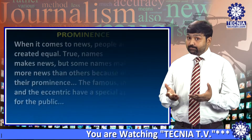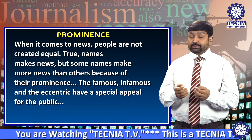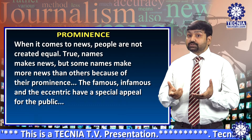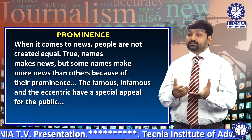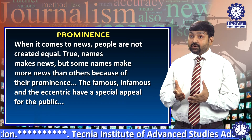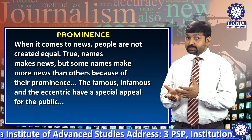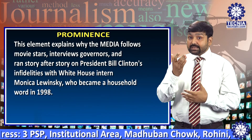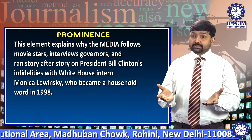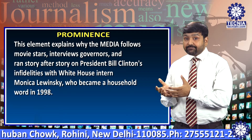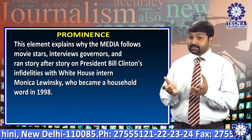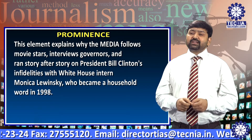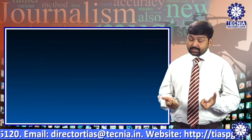Another most important element is prominence. When it comes to news, people are not created equally. Name makes news, but some names make more news than others because of their prominence. The famous, infamous and the eccentric have a special appeal for the public. This element explains why the media follows movie stars, interviews governors, and ran story after story on President Bill Clinton's infidelity with White House intern Monica Lewinsky, who became a household name in 1998.